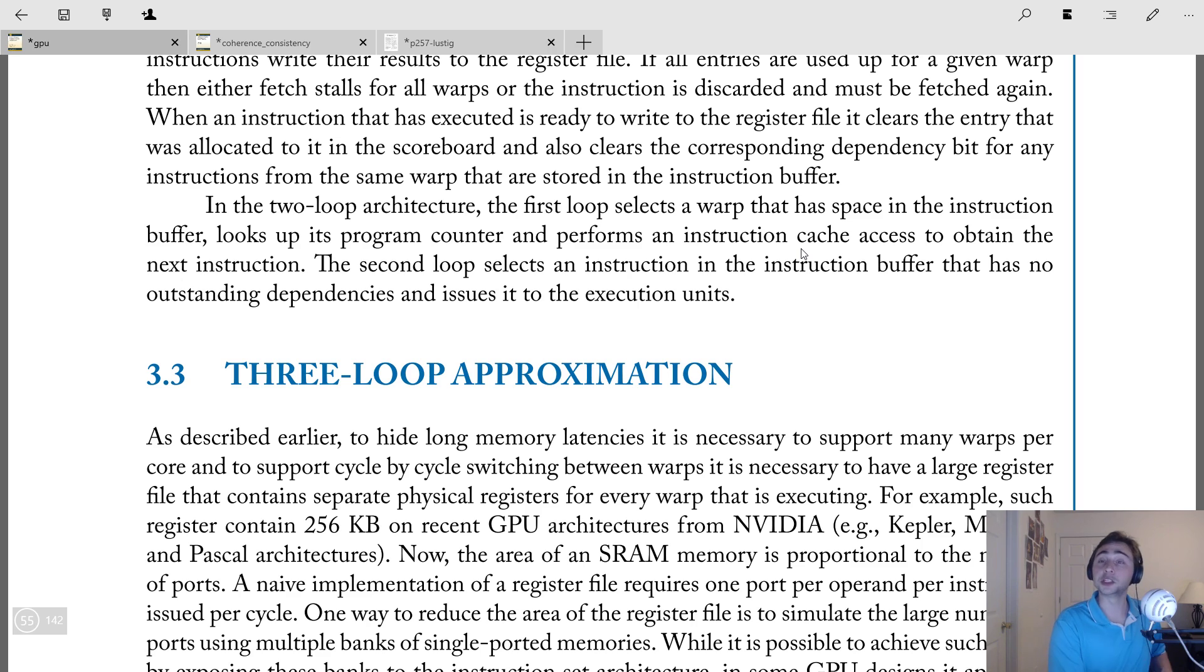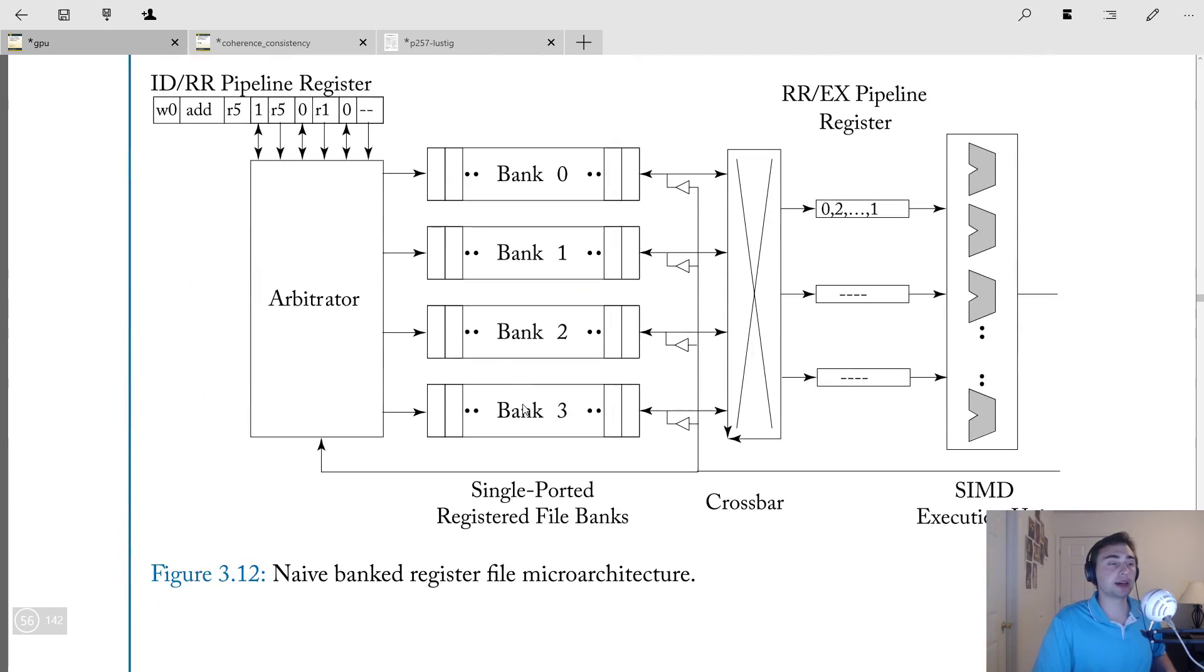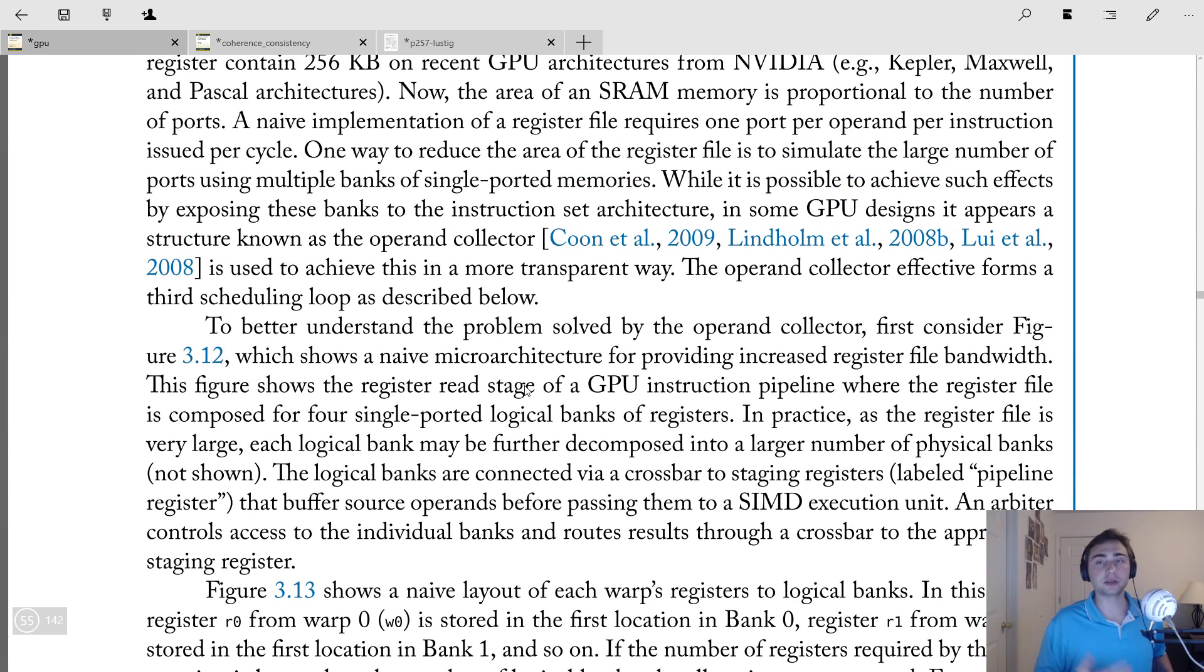So that's the key idea behind the two loop approximation. So this handles the original problem of only being able to do one instruction from a warp and needing a lot of warps. Instead, we can cut down on the number of warps and issue multiple instructions from the same warp. Now, we're going to continue on in the next video on the three loop approximation, and we're going to be talking about some interesting things, including how we actually access the register file when we've got all these instructions.